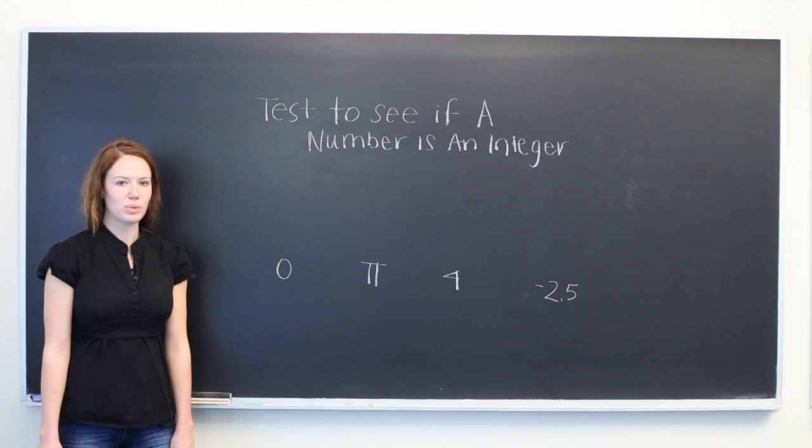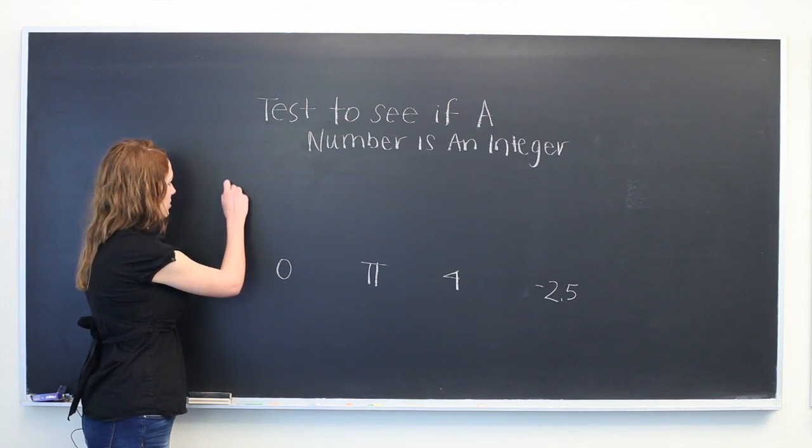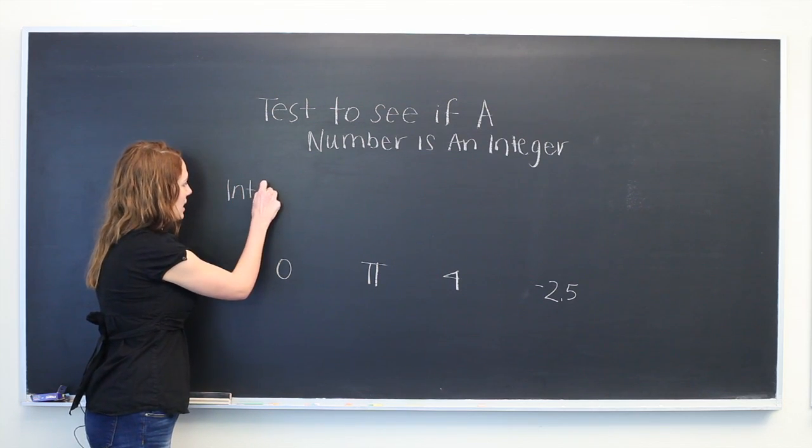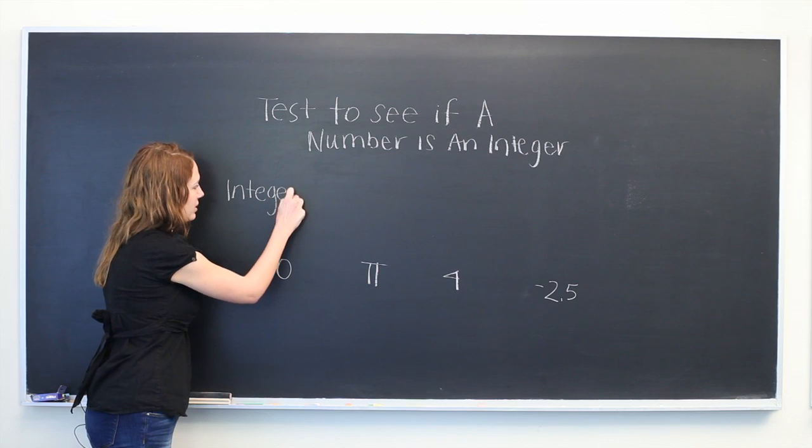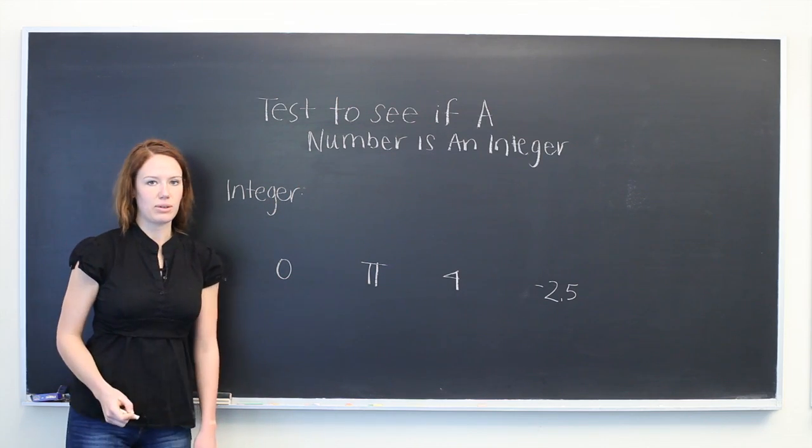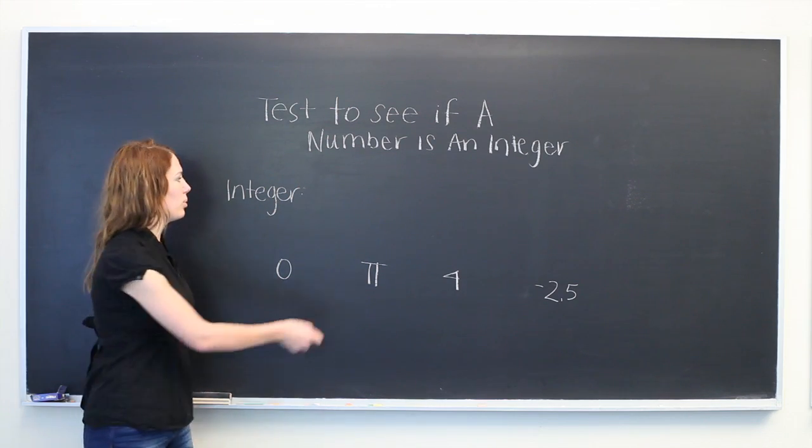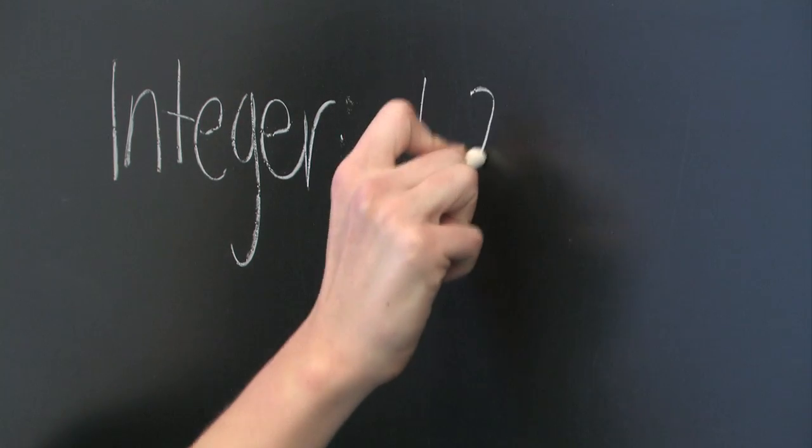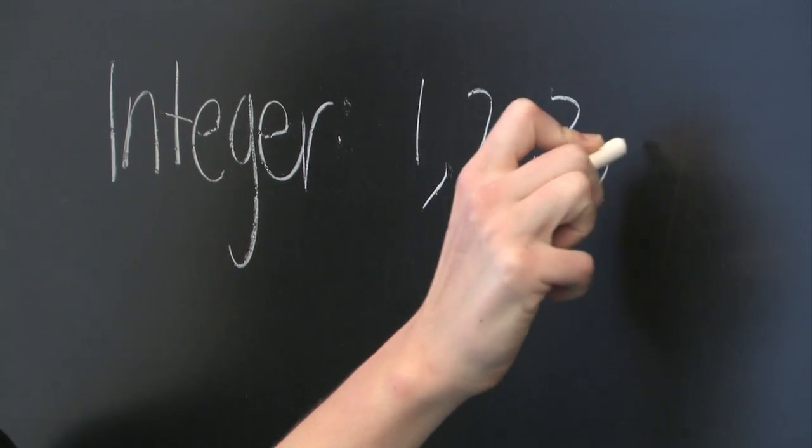So first we're going to define the word integer. We know that an integer consists of counting numbers, so 1, 2, 3, and so on.